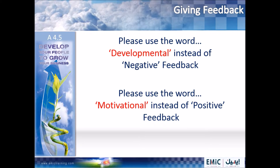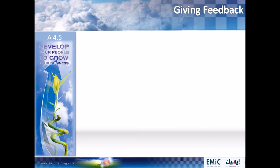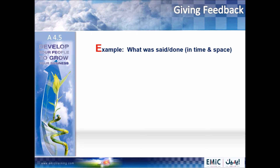Understanding that basic principle, let's now move on to the feedback process. The first thing when giving feedback is we should give an example — i.e. what was said and done in time and space. We should actually take the individual back to the very time and place where a motivational or developmental opportunity occurred, so that they understand exactly what it is we're talking about and can specifically connect with that situation.